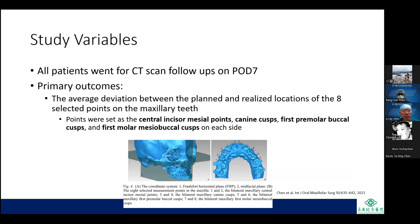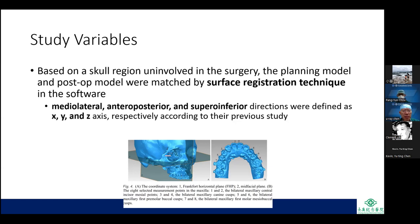The primary outcomes were the average deviation between the planned and realized locations of eight selected points on the maxillary teeth: central incisor mesial points, canine cuspids, first premolar buccal cuspids, and first molar mesial buccal cuspids on each side. The planning model and post-op model were matched by surface registration in the software, and medial-lateral, anterior-posterior, and superior-inferior directions were defined as X, Y, and Z axes respectively.